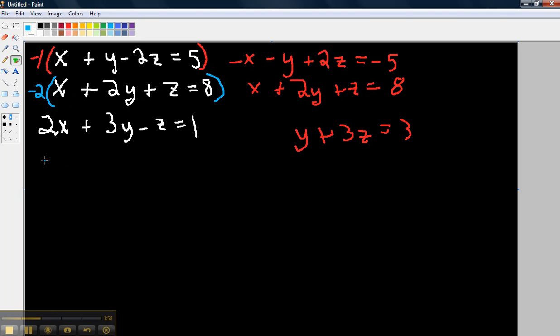So I'm going to have, I'm going to rewrite it down here. Negative 2x, I'm just distributing up here, minus 4y minus 2z equals negative 16.